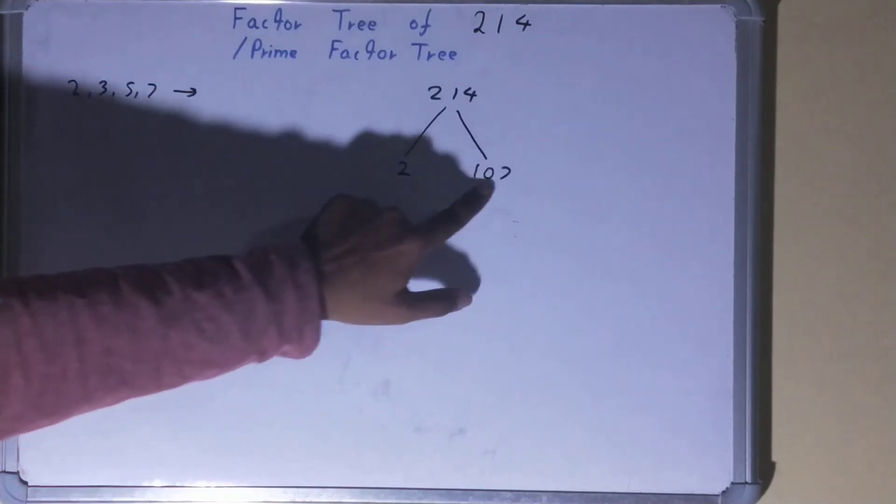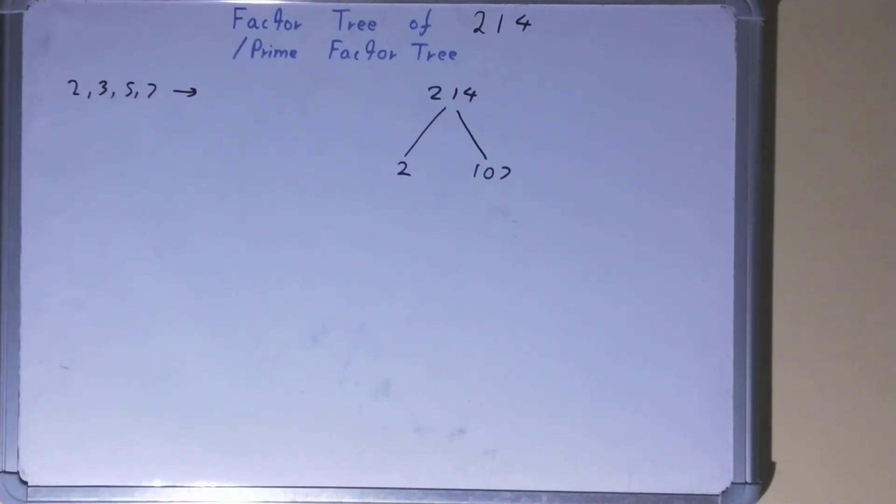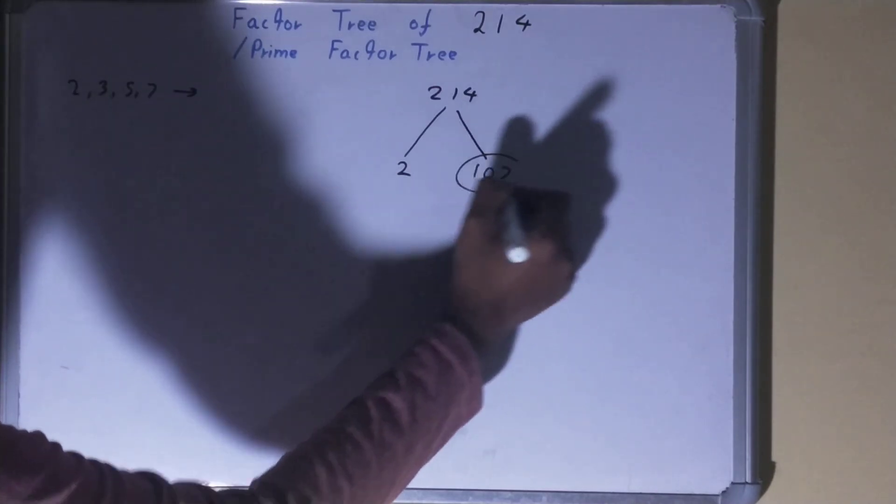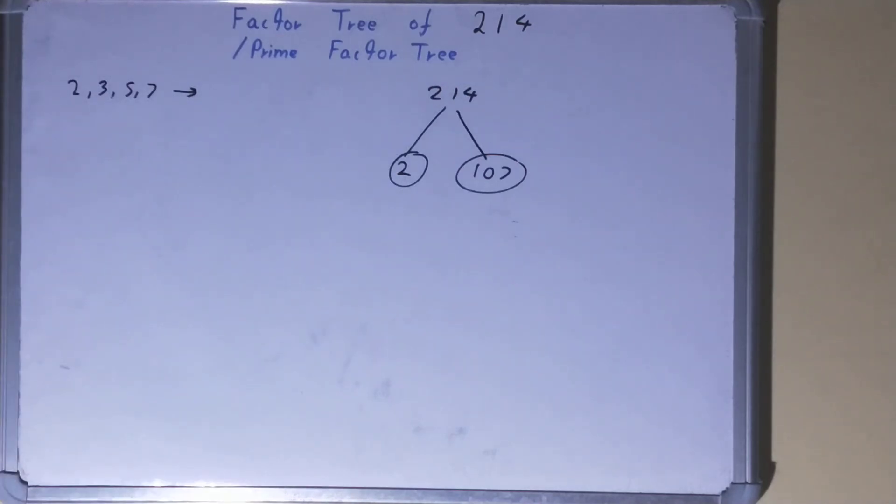The answer is no, because 107 is a prime number. So your work is done over here. The only thing you need to do is circle the ending nodes or the terminating nodes like this, and that will be the